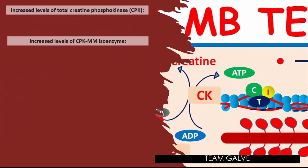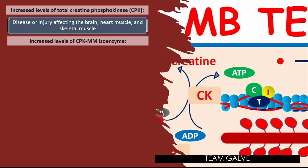When there are increased levels of total CPK, the doctor may rule out disease or injury affecting the brain, heart muscle, and skeletal muscle. When there are increased levels of CPK-MM isoenzyme — which relates to skeletal muscle — the following conditions may be indicated: crush injuries, delirium tremens, electroconvulsive therapy, electromyography, hypokalemia, hypothyroidism, IM injections, malignant hyperthermia, muscular dystrophy.